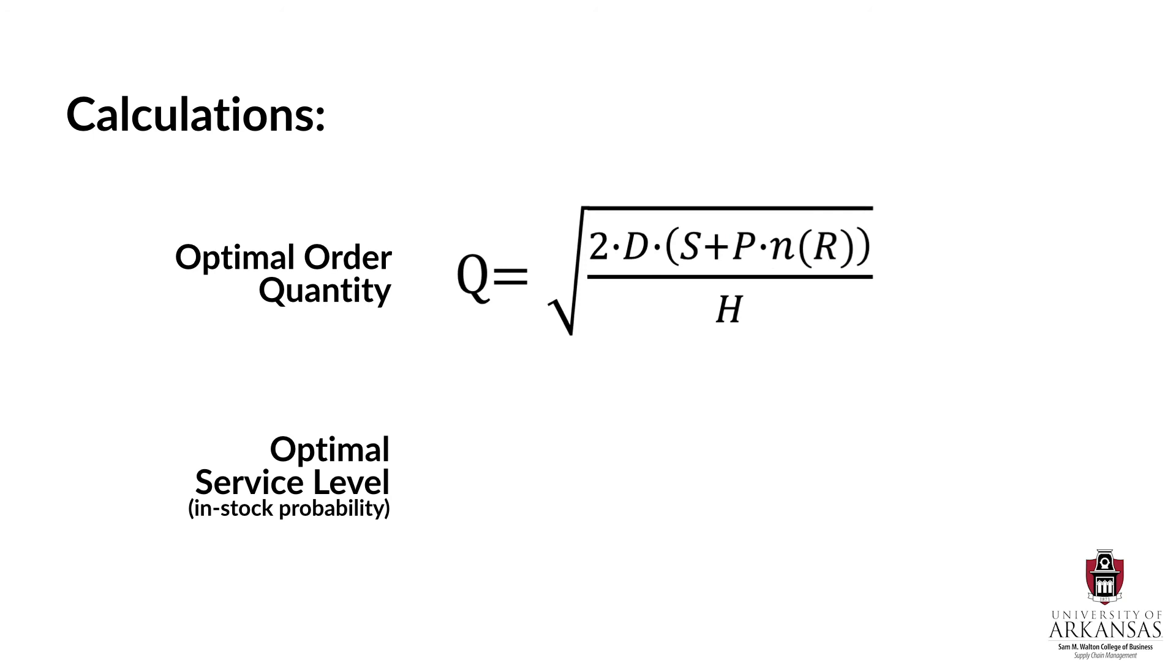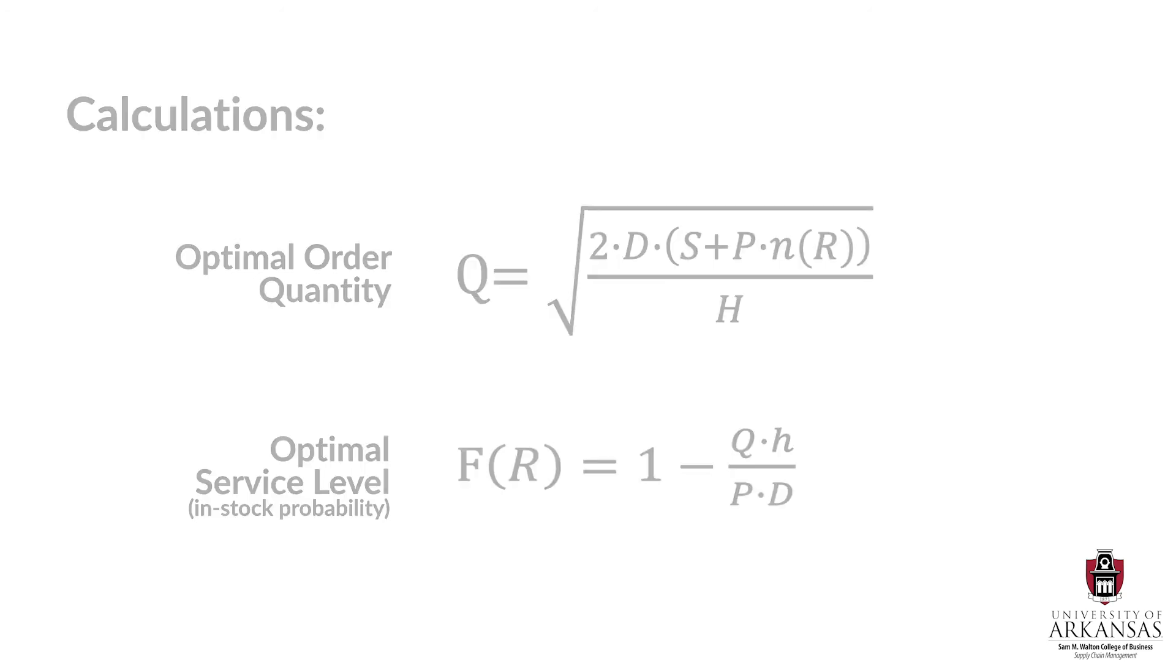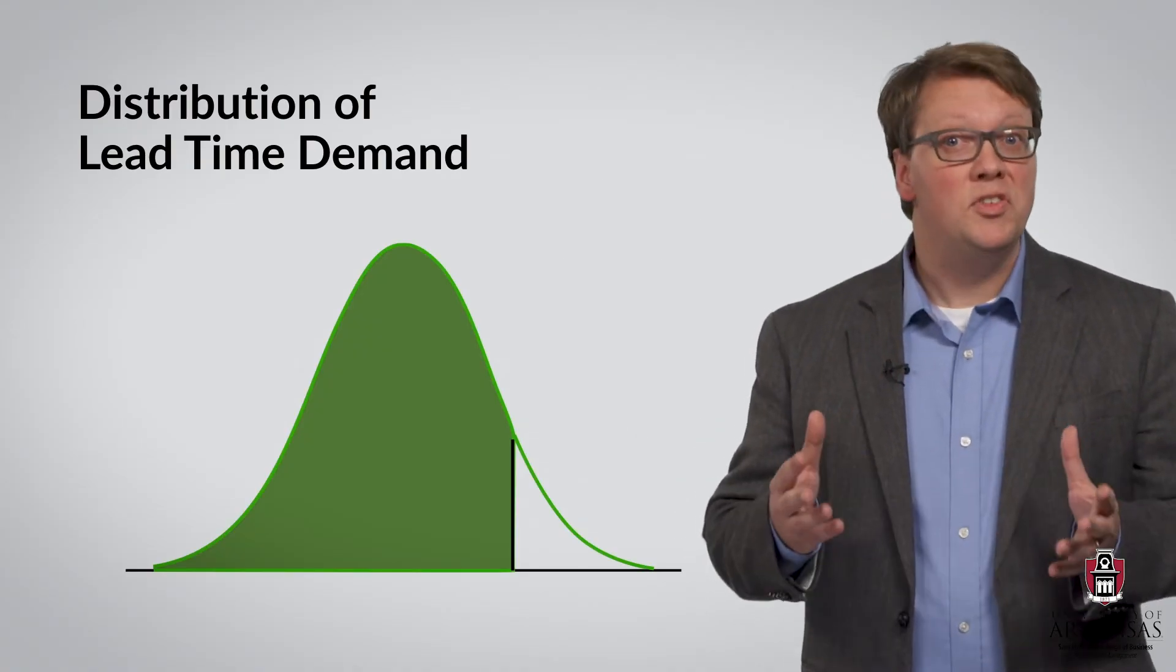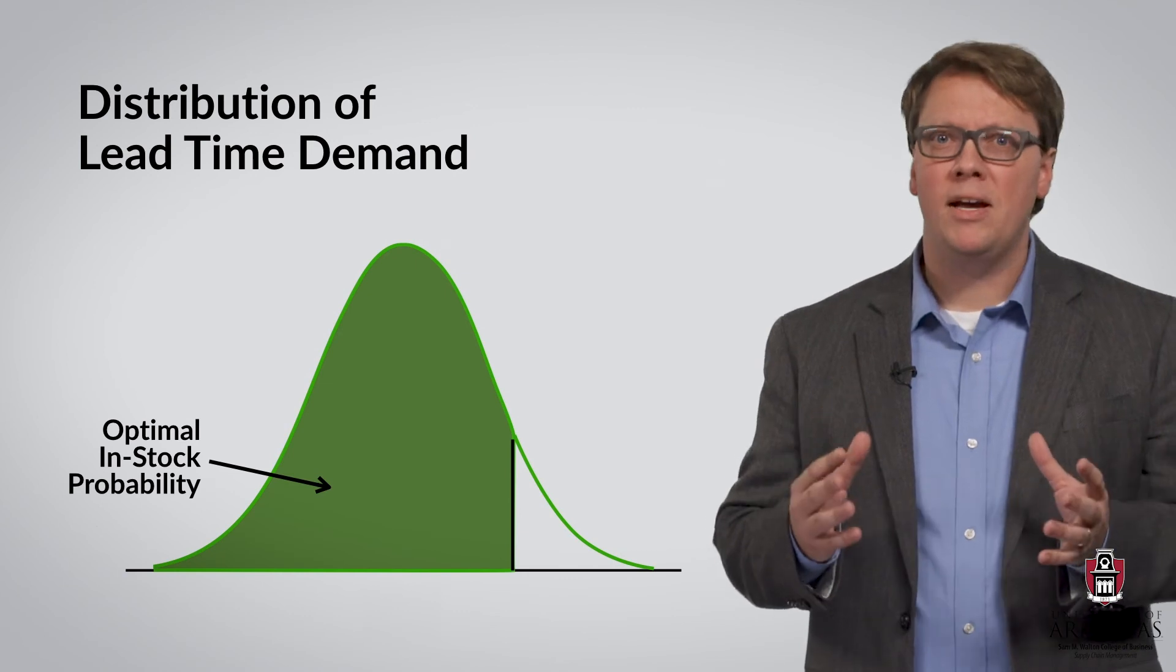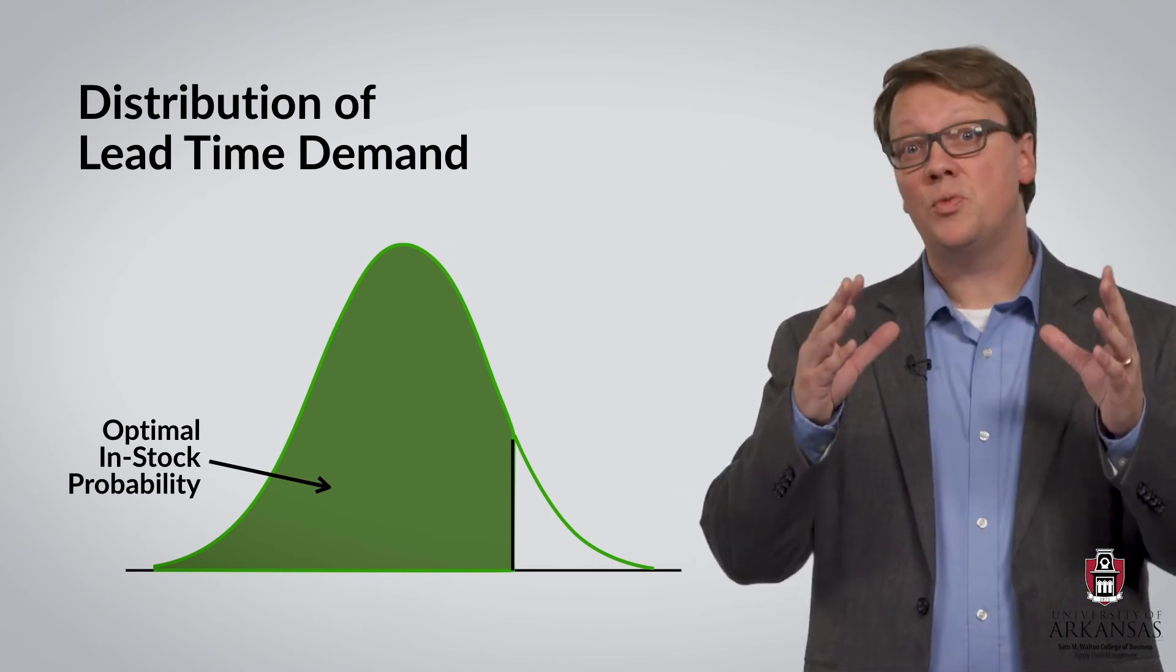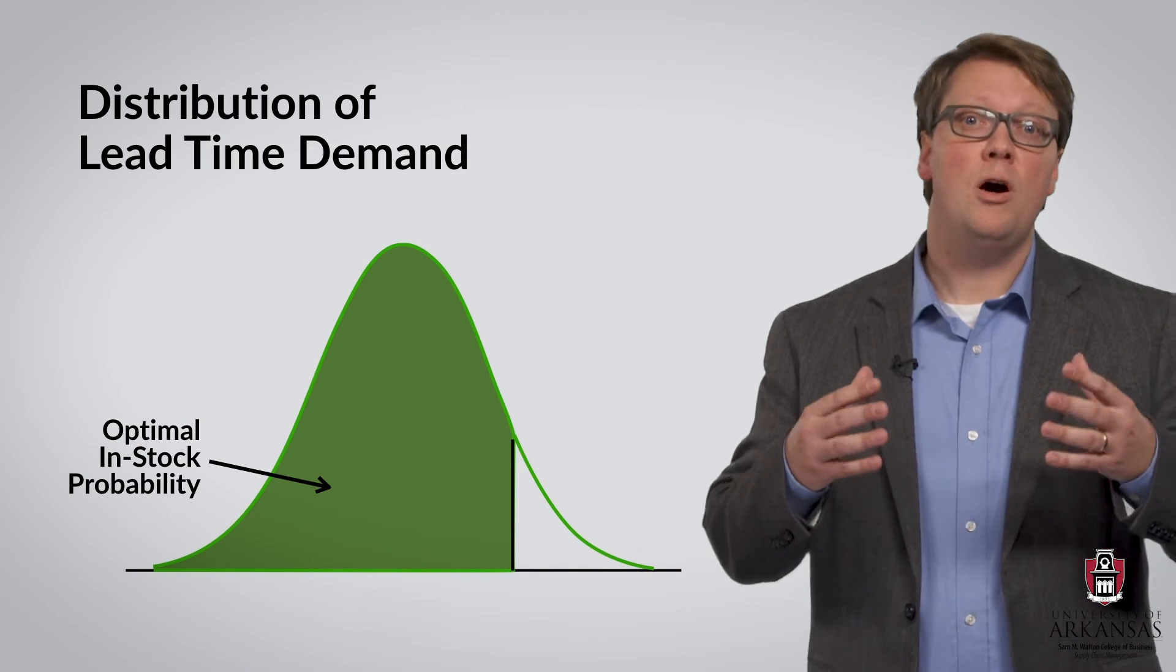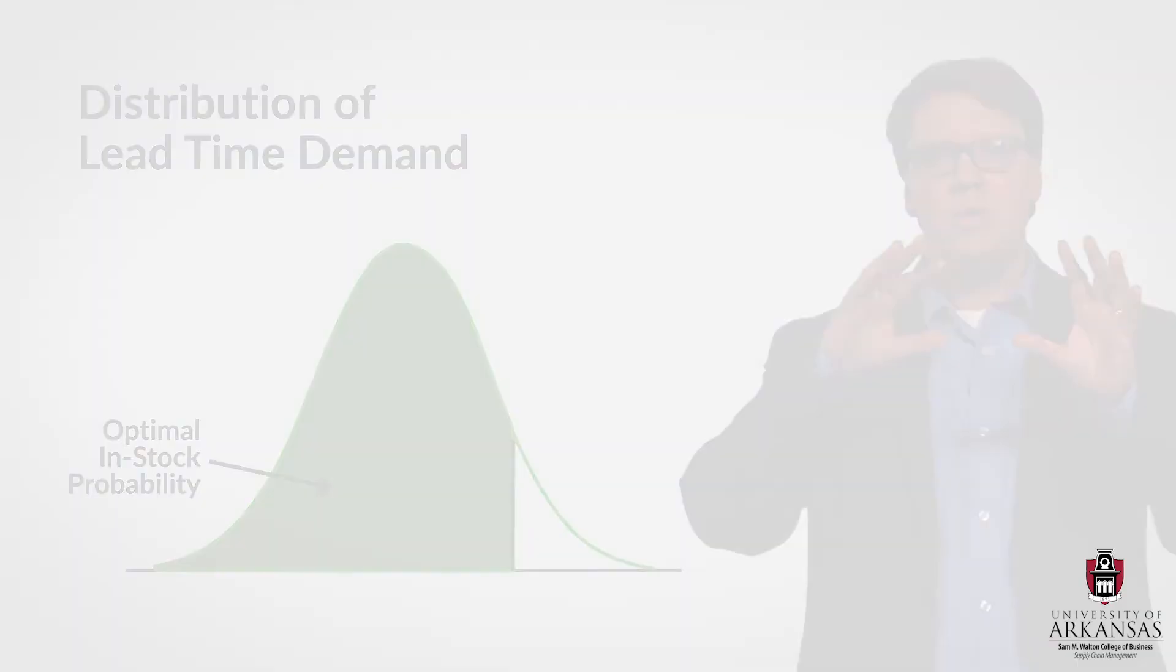When it comes to the optimal reorder point, things are slightly more complicated. The optimization of the total cost function yields what we call the optimal in-stock probability, F of R, that will allow us to determine the optimal reorder point. We can visualize the in-stock probability as the probability mass shaded in green in this graph of the probability density function of lead time demand. Now let me flip this graph over to its side and embed it in the graph of inventories we saw earlier.